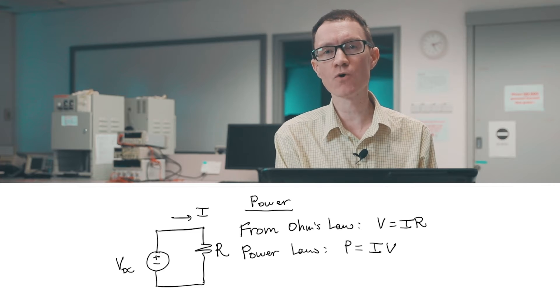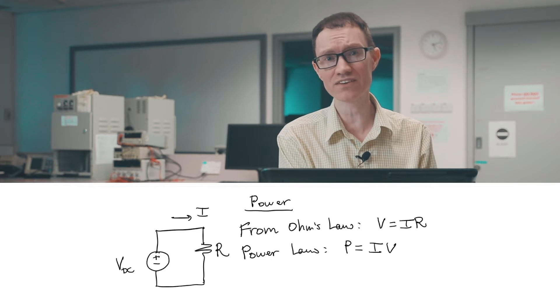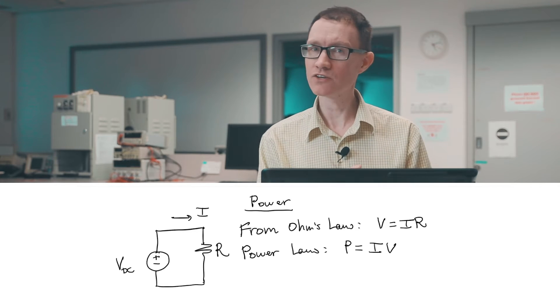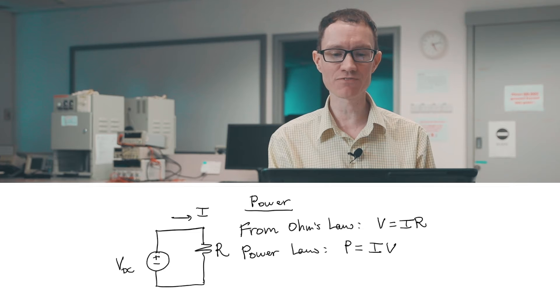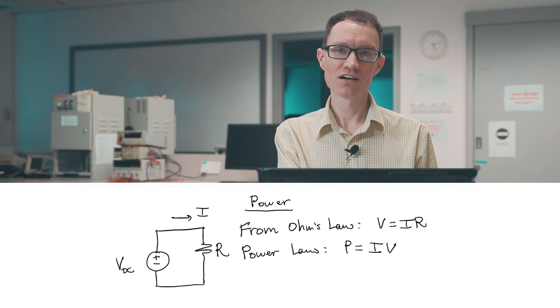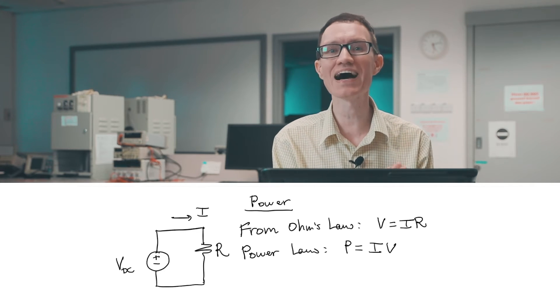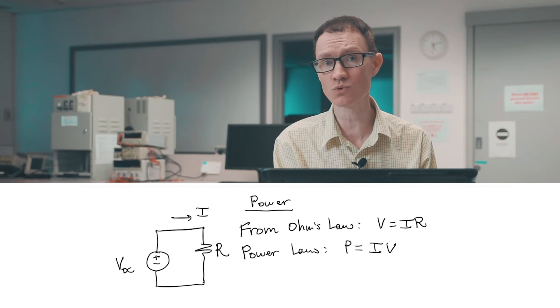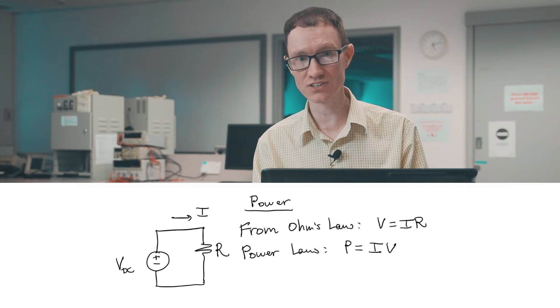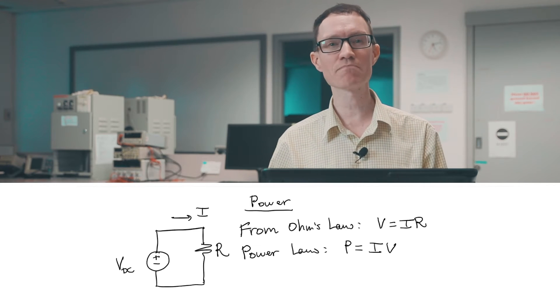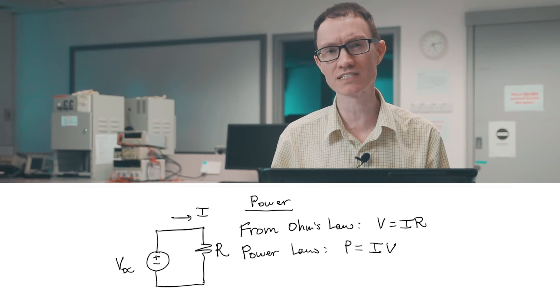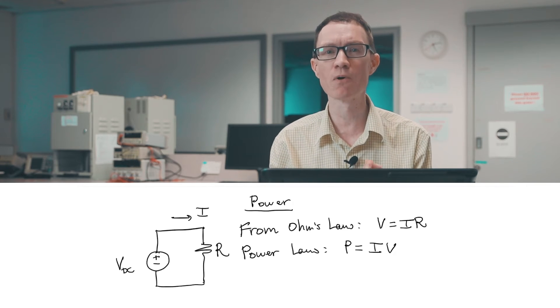works for both the source and the load, they mean two very different things. If I write P equals IV for the voltage source, that means the voltage source supplies this much power. But if I write P equals IV for the resistor, it means this is the amount of power that the resistor consumes. It's the amount of power that the resistor burns up.